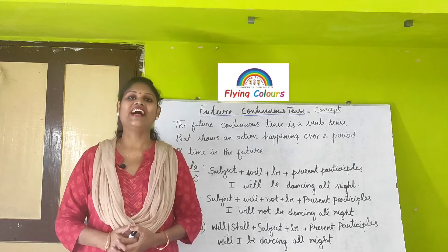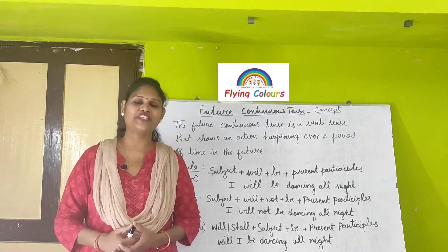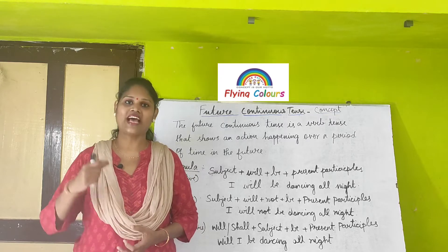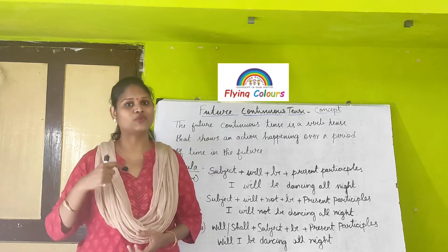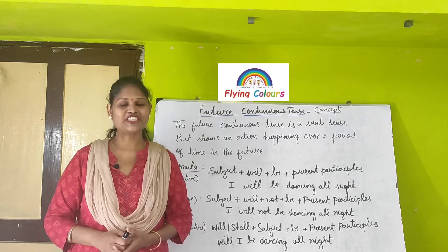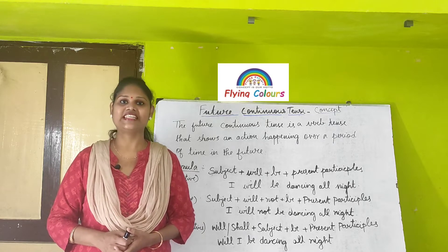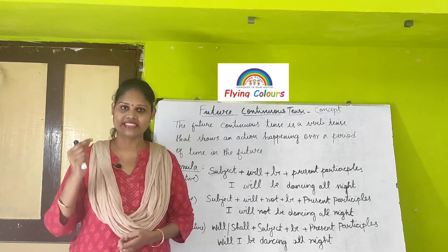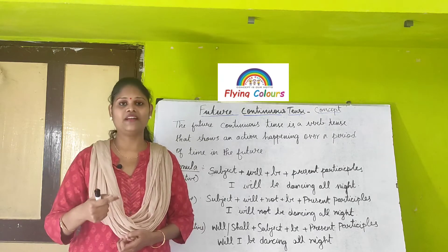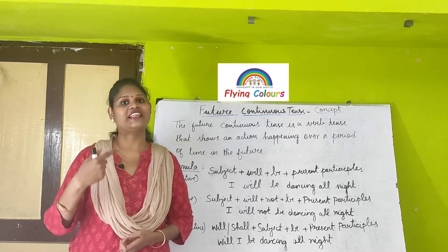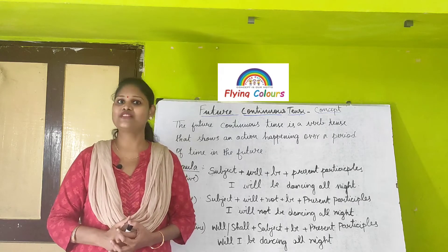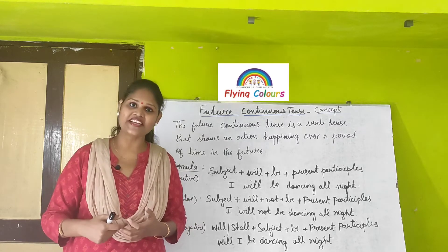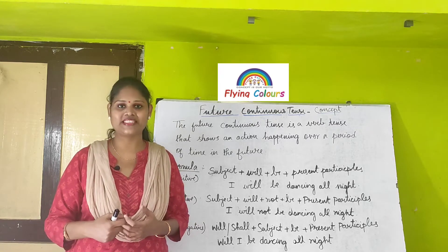Welcome back to Flying Colors. In today's class, let me teach you future continuous tense. Continuous tense means the action is prolonged to a specific time in the future. The future continuous tense is a verb tense in which the action will happen over a period of time in the near future. In future continuous tense, you have positive sentences, negative sentences, and interrogative sentences.